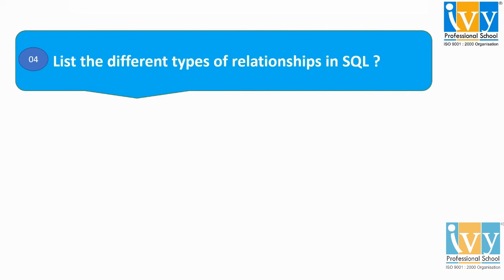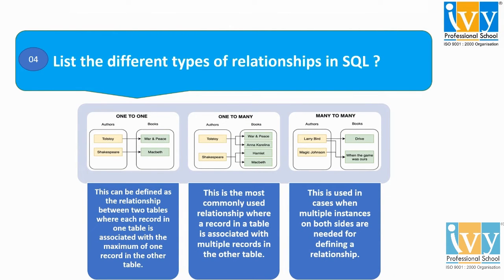Question 4: List the different types of relationships in SQL. There are three types: one to one, one to many, and many to many. Starting with one to one: the one-to-one relationship can be defined as the relationship between tables in which each record in a table is associated with a maximum of one record in another table. For example, two tables — author and books — in which a particular author is associated with a particular book in the other table.